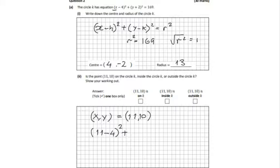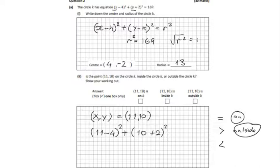And on to the second bracket now, (y+2)² - we replace the y with 10, so we get (10+2)². If these are equal to r squared, it's on the circle. If it's greater than, it's outside. And if it's less than, it's inside.